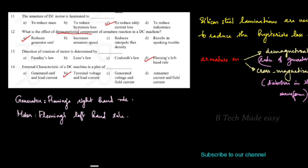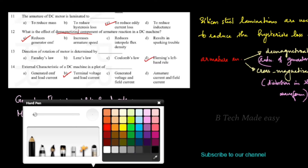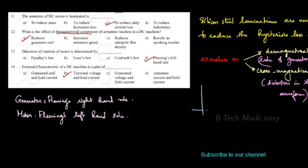Terminal voltage versus load current is called the external characteristics of a DC machine. In this case, the load current is represented by IL on the X-axis and the terminal voltage on the Y-axis. This is how the DC machine's external characteristics are plotted.